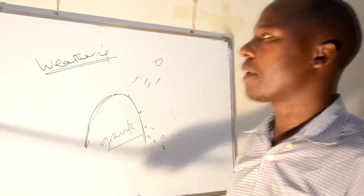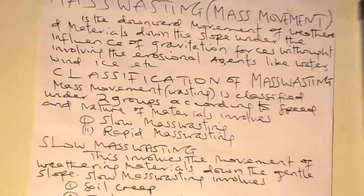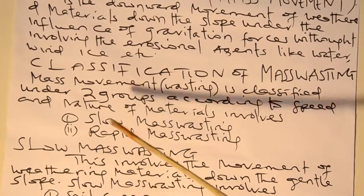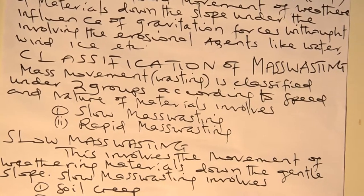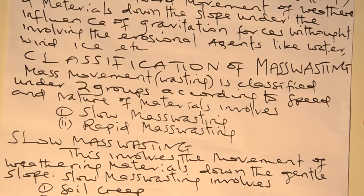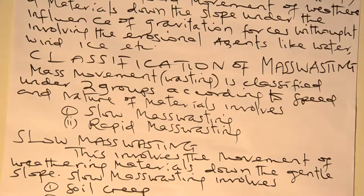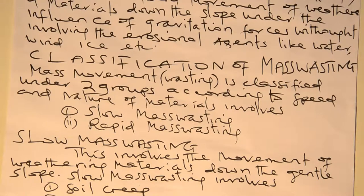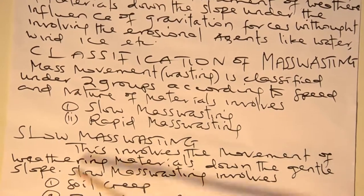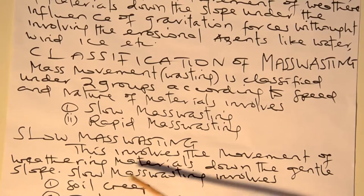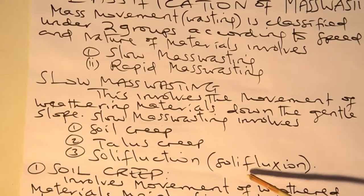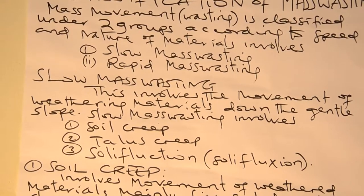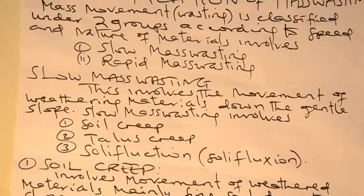Classification of mass wasting: mass wasting or mass movement is classified under two categories according to speed and the nature of material involved. According to nature of material involved, there is slow mass wasting and rapid mass wasting. Slow mass wasting involves the movement of weathered material down the gentle slope. Therefore, slow mass wasting involves soil creep, talus creep, and solifluction as its parts.